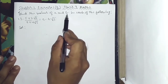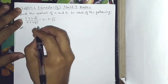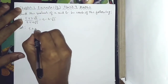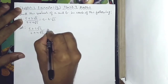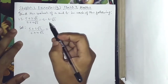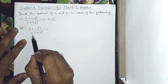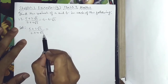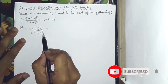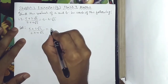Find the value of a and b. The expression is 5 plus 2 root 3 divided by 7 plus 4 root 3 equals a minus b root 3. So, the denominator is to be rationalized.